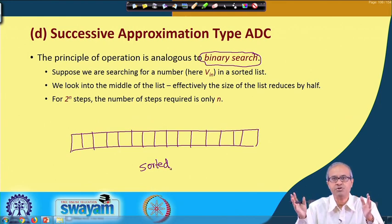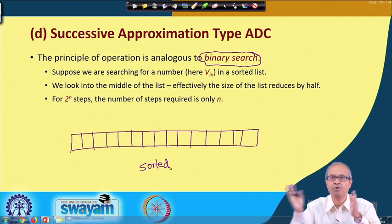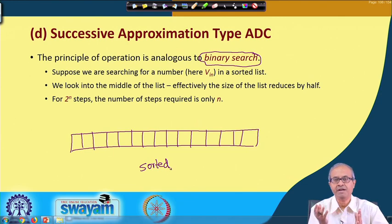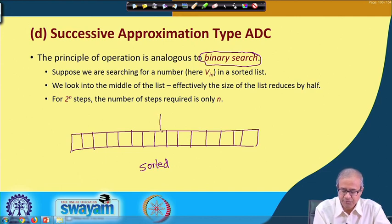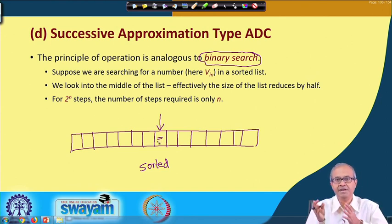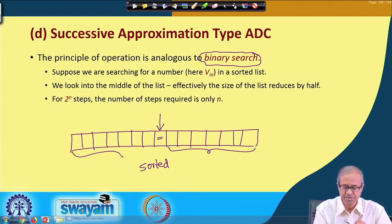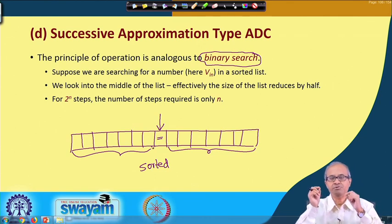If the array was not sorted, I would have to search from the beginning to the end and look at all the elements. But because it is sorted, I can adopt a very intelligent strategy. I can start with the middle of the array and compare whether the middle element is less than or greater than the element I want to search. If the middle element is less, my element must be on the right-hand side; otherwise it must be on the left-hand side. In one comparison, I have reduced the size of the list to half.